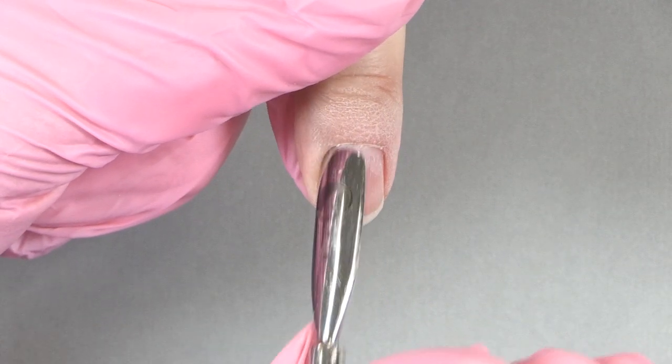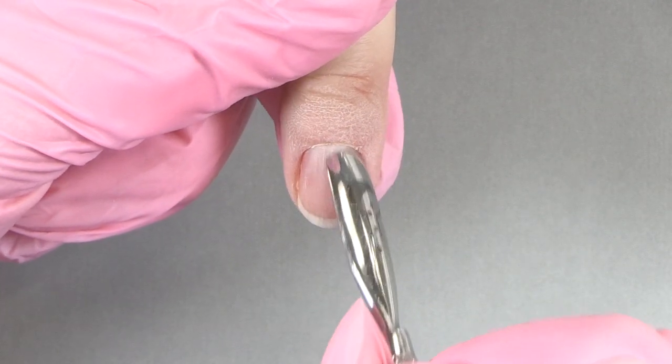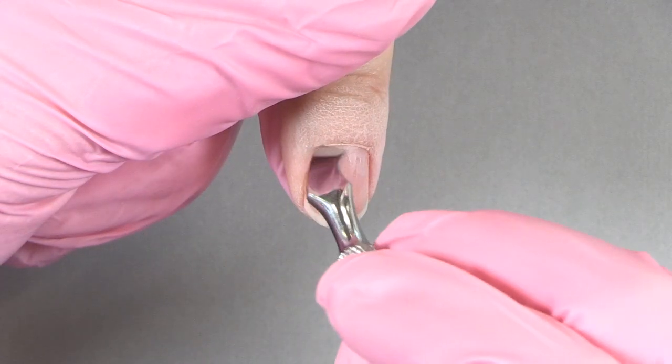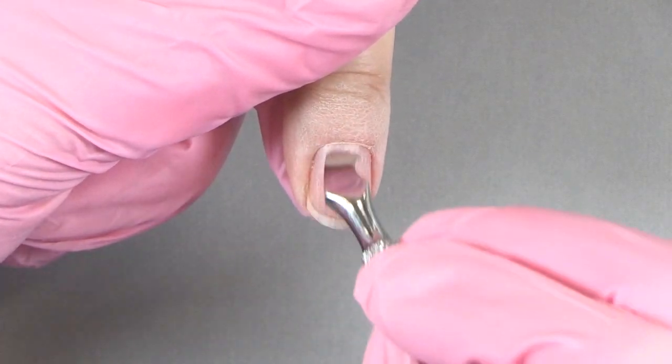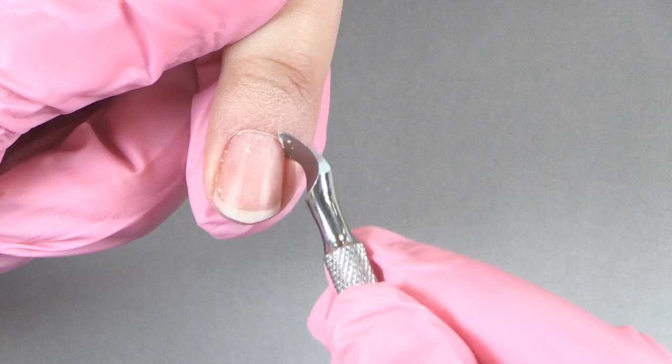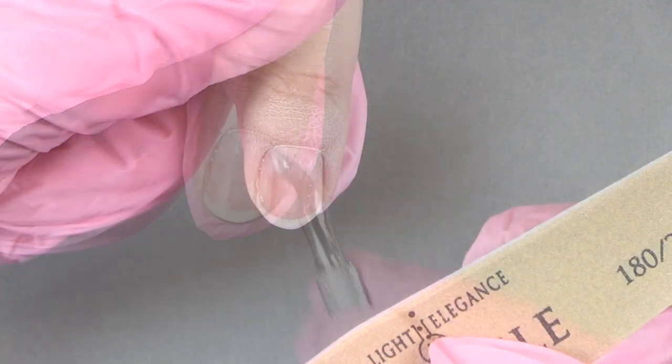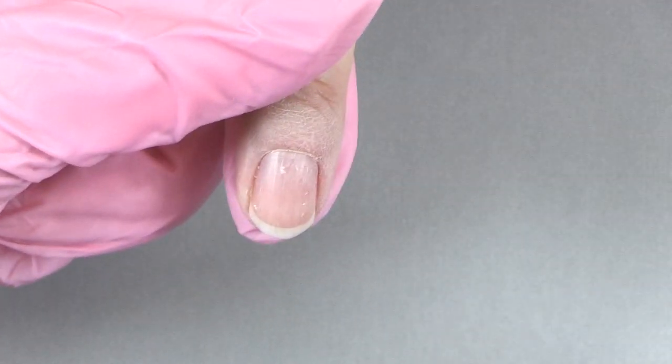Before any service, we're going to go in with the Light Elegance cleanser and cleanse all the oils off of that nail. Once you have your clean nail, you're going to take your cuticle pusher and push back those cuticles. Scrape off some of that dead skin on the side and make that nail look nice and clean. Now we're ready to prep that nail.